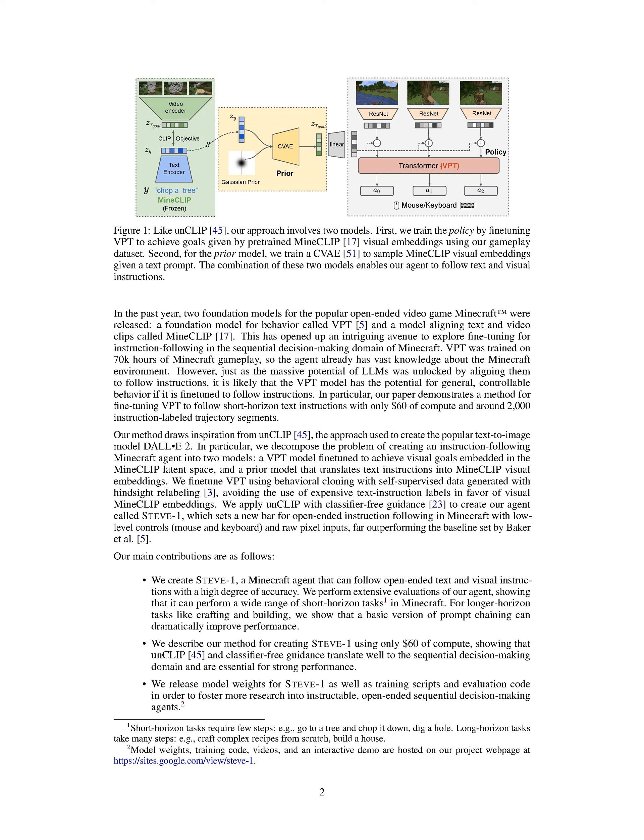We believe that, like language models, VPT's potential for general, controllable behavior can be unlocked by fine-tuning it to follow instructions. We demonstrate a method for fine-tuning VPT to follow short-term text instructions using only 60 hours of computational resources and around 2,000 instruction-labeled trajectory segments. Our method is inspired by UnClip, the approach used to create the popular text-to-image model DALL-E 2.